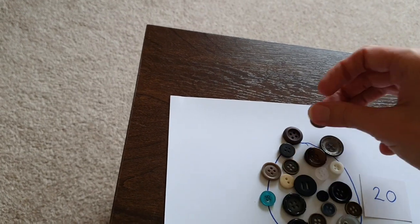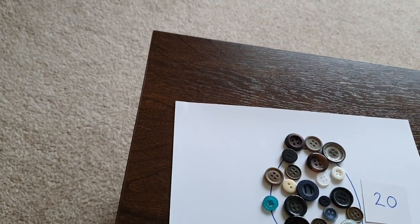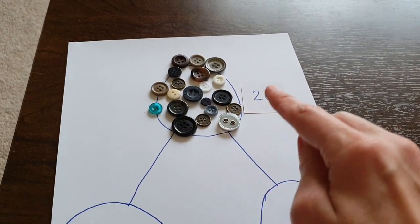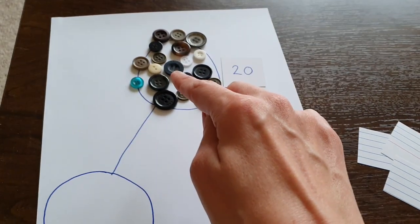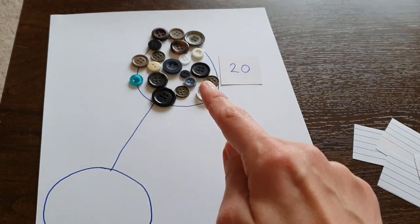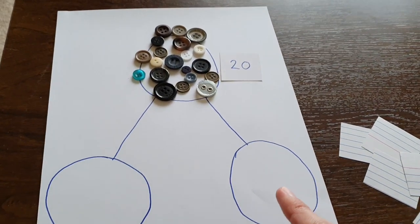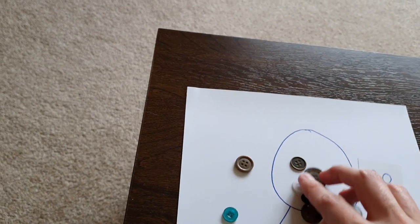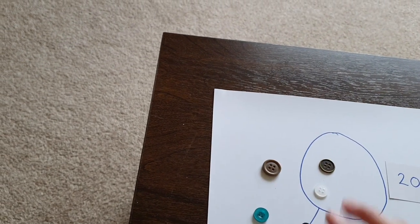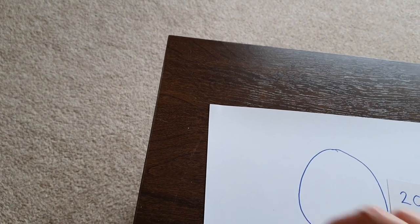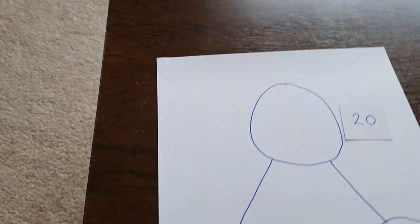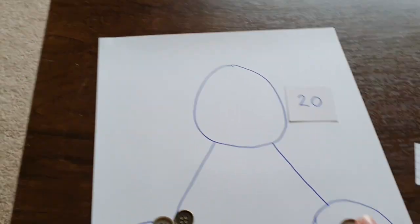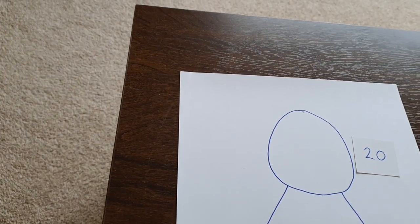Nineteen, twenty. And then what you do is you move some of the counters to this circle and some to this one. And you can move them however you like. You could move them all into one, maybe move one over there, or you could move them a little bit more like this.